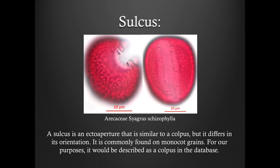Now let's discuss some additional information regarding apertures. A sulcus is an ecto aperture that is similar to a culpus, but it differs in its orientation. It is commonly found on monocot grains. For our purposes, it would be described as a culpus in the database.